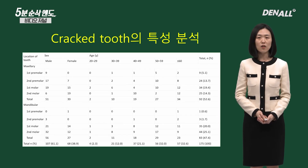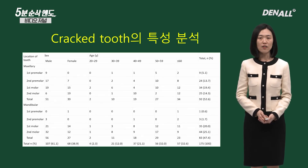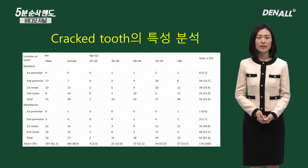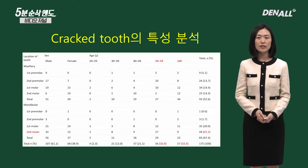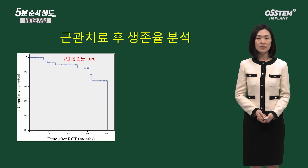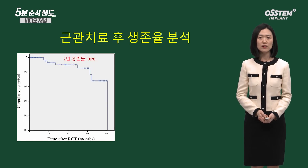If we divide it by gender, age, and tooth position, as anticipated, crack occurrence was meaningfully high in age groups of 50s and 60s, and it occurred frequently in the second molar. The two-year survival rate of cracked tooth which has had root canal treatment was 90%.